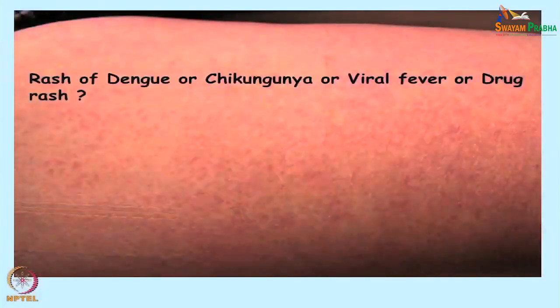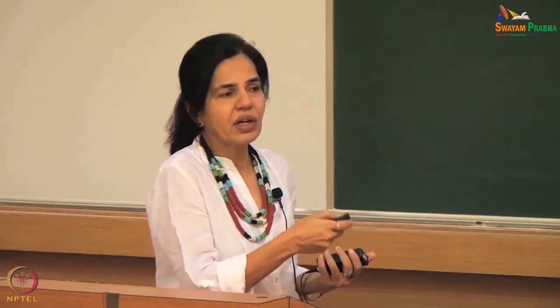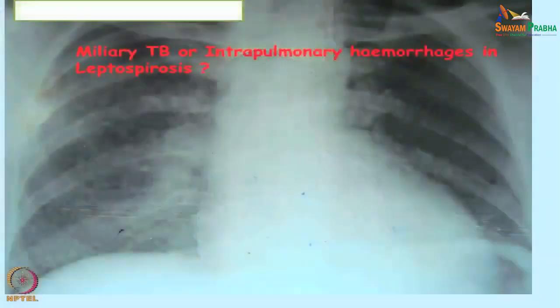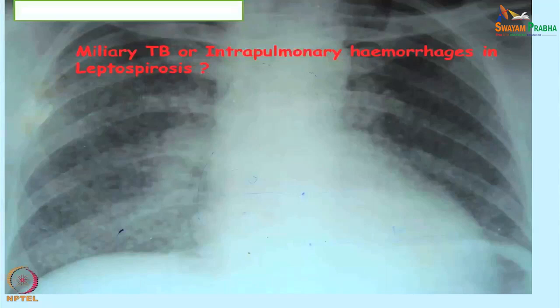This is a patient who has a rash — a macular rash as seen in this picture — which can be seen in dengue, chikungunya, or viral fever. Also, if a patient goes to a general practitioner for fever and is given antibiotics or anti-inflammatory drugs, a drug-induced rash can also be seen. So by looking at the rash alone, one does not know what is the cause. This X-ray shows reticulonodular shadows throughout the lung fields. This could be a finding in malaria, disseminated tuberculosis, leptospirosis where you get intrapulmonary haemorrhages, or adult respiratory distress syndrome which occurs in any severe infection or septic condition.